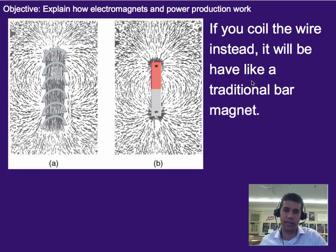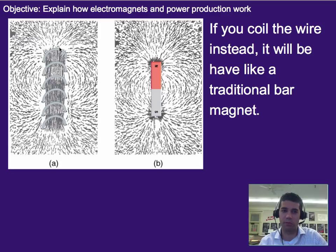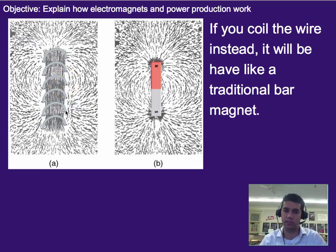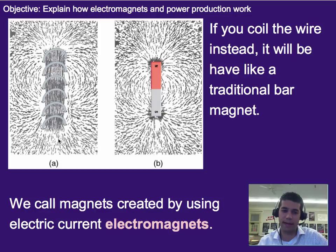In order to get something to behave more like a bar magnet, what you do is take the wire and actually make coils. The wire is coming out of the page on this side and then coming around and going into the page on that side, or maybe vice versa. By coiling the wire, we get a pattern or behavior very similar to a traditional bar magnet. This is called a solenoid, but it can also be called an electromagnet — that's the general term. Magnets that we create by using electric currents are called electromagnets.